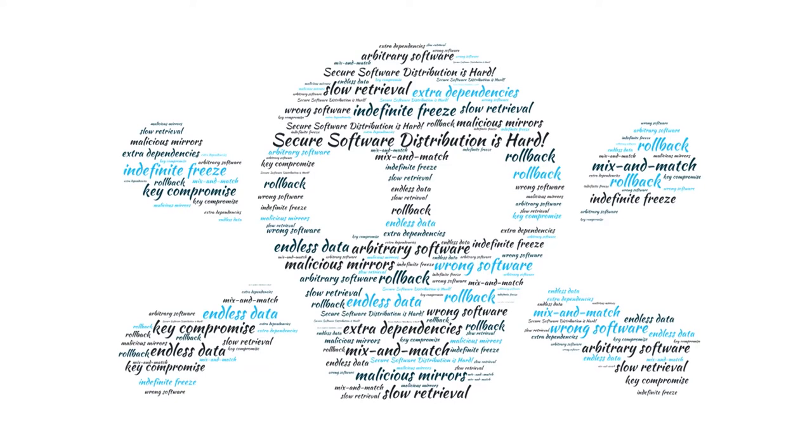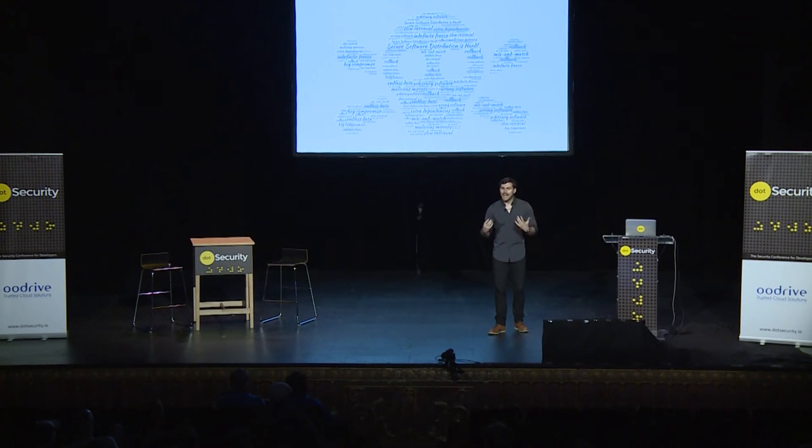Applying GPG signatures is not the same thing as securing software. You should think of software security as a holistic approach — you should follow a framework. How do you rotate your GPG key? How do you revoke it? How do you allow developers to sign some packages but not others without giving them your key material? Package managers today are either downloading via HTTP, just using HTTPS, or applying signatures but remaining vulnerable to mix and match attacks, indefinite data, freeze attacks, and downgrade attacks.